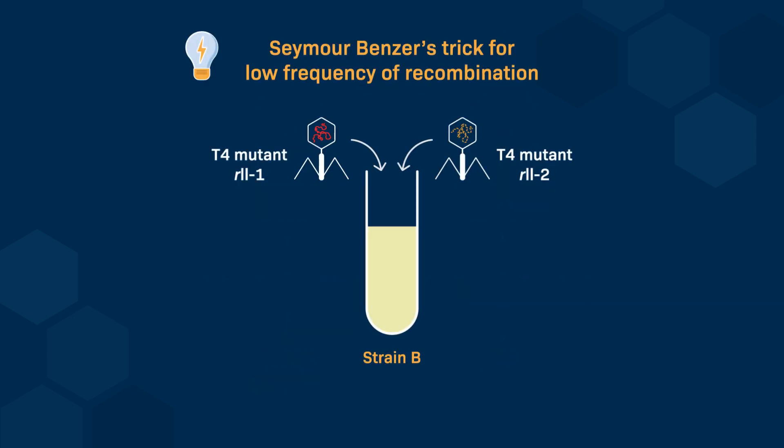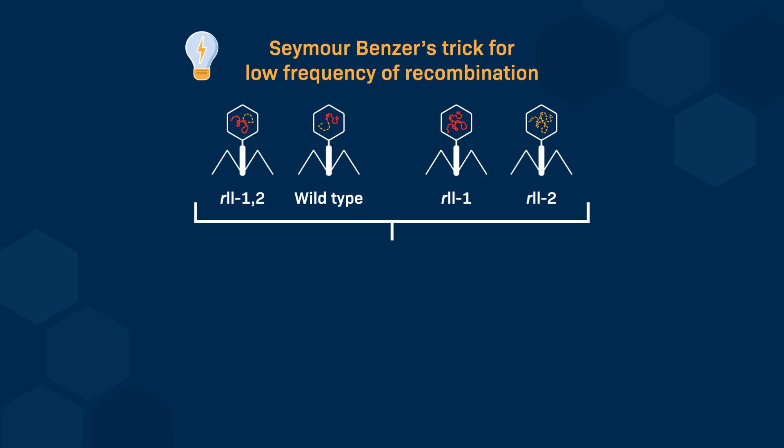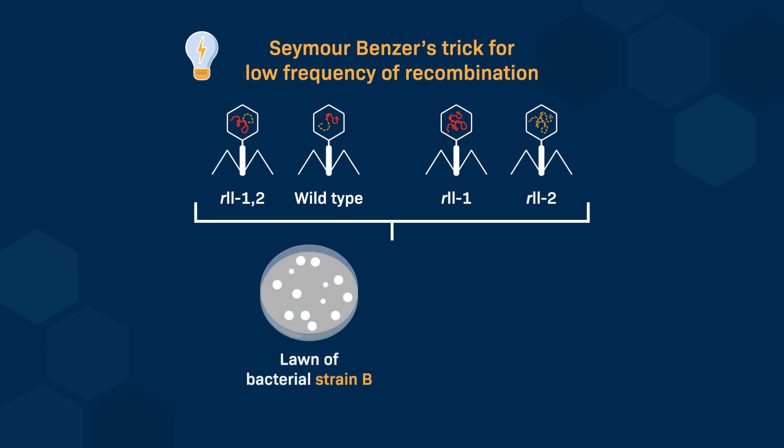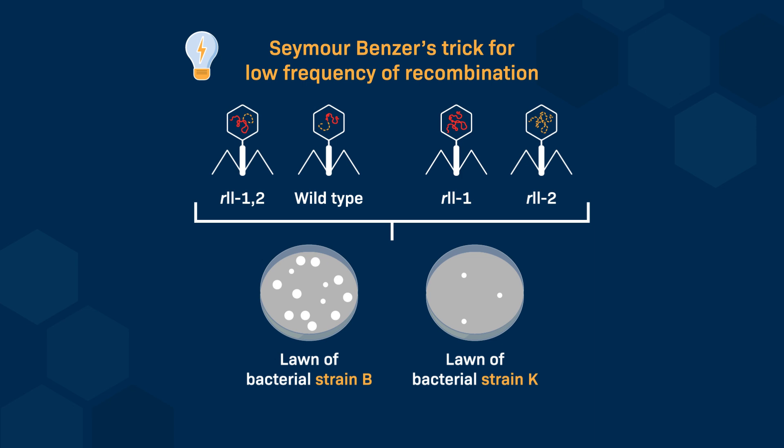Benzer proposed a variation of the previously described recombination assay. The first step is unchanged, with two strains of rapid lysis mutants and the bacterial strain B. The change is in the second step, where a sample of the first step progeny is plated on both strain K and strain B. Both large and small plaques can be counted on plate B, while only small plaques are formed on plate K. Therefore, the plating on strain K can be done with a high concentration of bacteriophage without making counting small plaques difficult. This simplifies the detection of very low frequencies of recombination and the study of rapid lysis mutations that are very close along the bacteriophage genome. As long as step 2 is performed with an excess of bacteria compared to the number of bacteriophages, the frequency of recombination will be accurately determined.